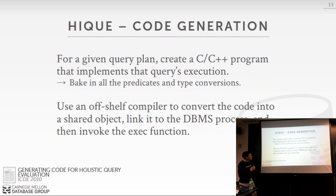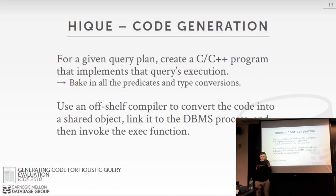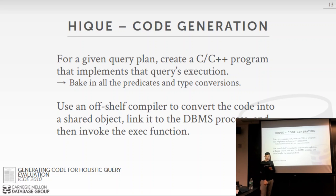This is from a paper by the Edinburgh group for a system called HiQu — a classic example of a transpilation database system. Given a query plan, their database system generates C code on the fly that implements exactly the execution of that query. All the predicates, all the expressions — you put them into a direct form you can execute without additional lookups or tree traversal. Then they do a fork-exec on GCC, feed in the generated C code, GCC spits out a shared object, they link it into their process, and invoke a function to execute it.